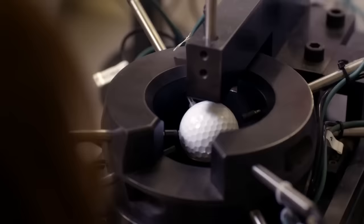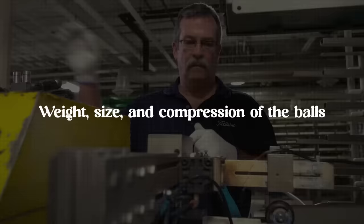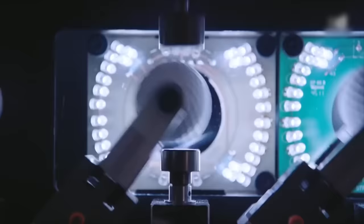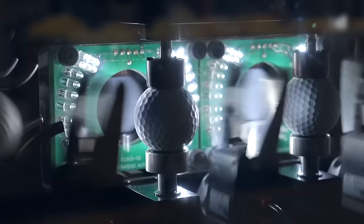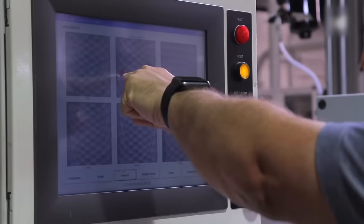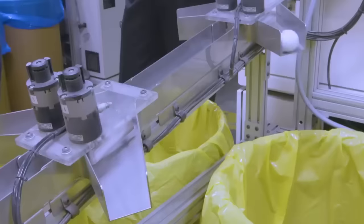The golf balls then undergo rigorous quality control checks. This includes measuring the weight, size and compression of the balls, as well as inspecting them for any cosmetic imperfections. One way the factories do this is to use robotic arms to shuttle the balls through a chute entry. If the ball is not smooth and uniform, it won't go through this hole. Only the golf balls that meet the specified standards move toward the next step.